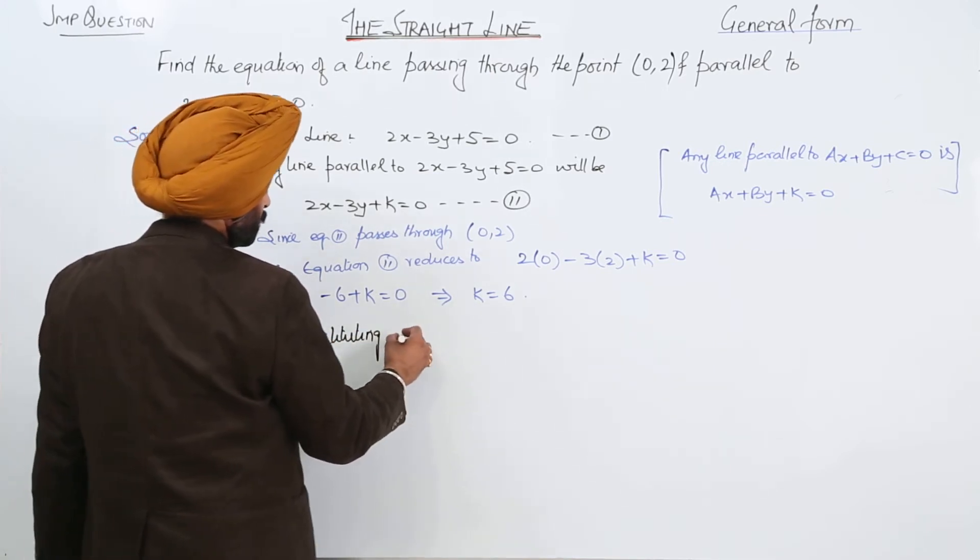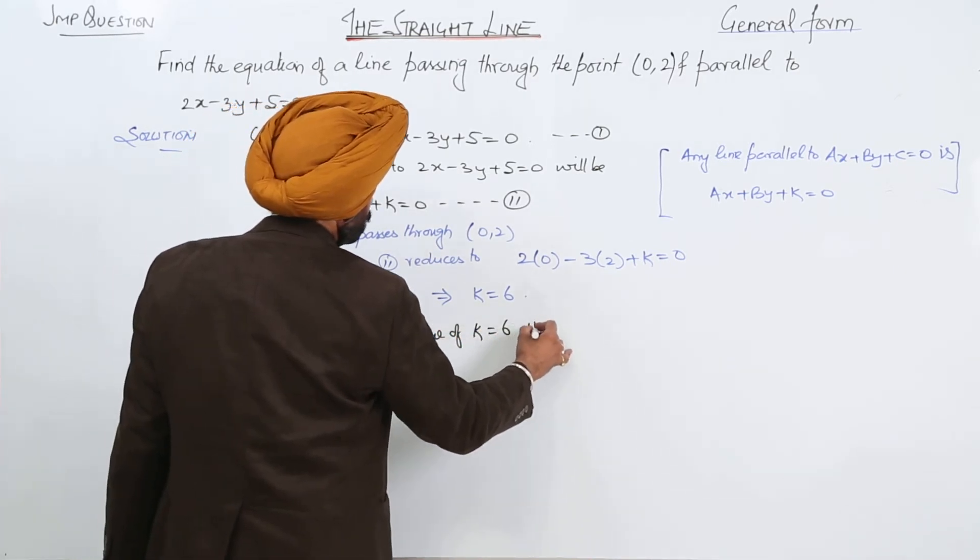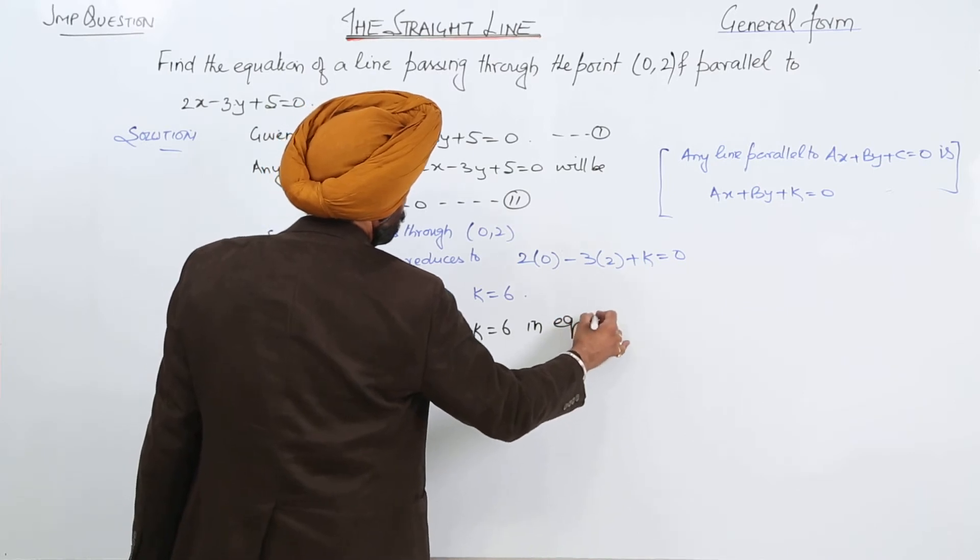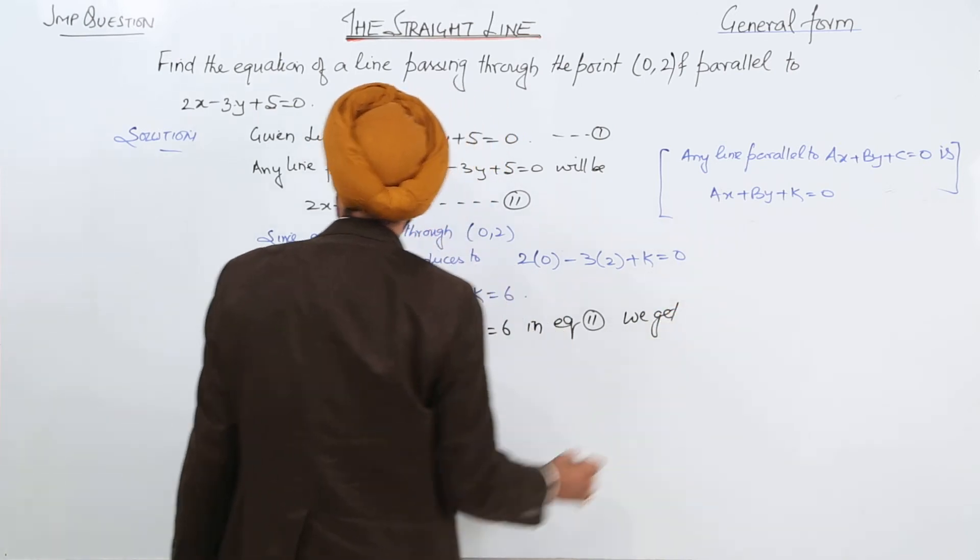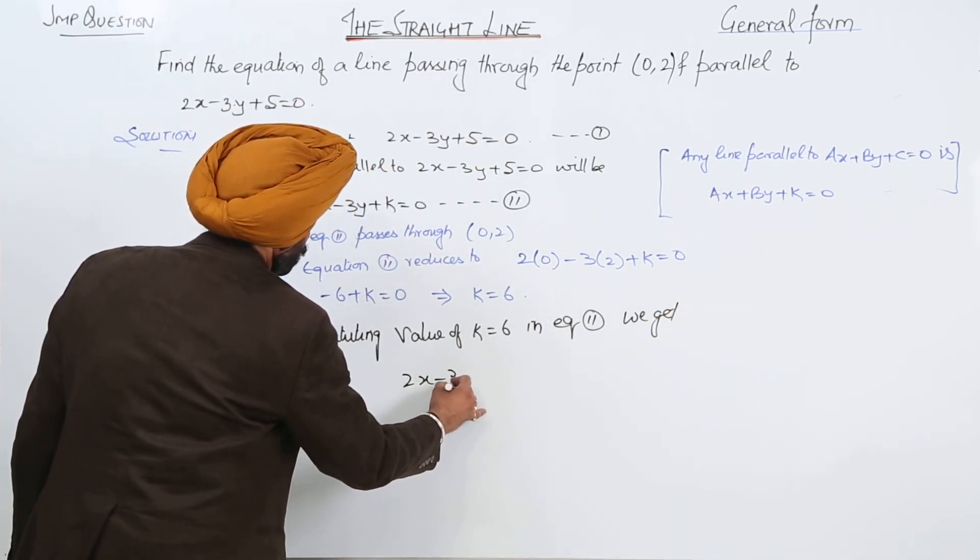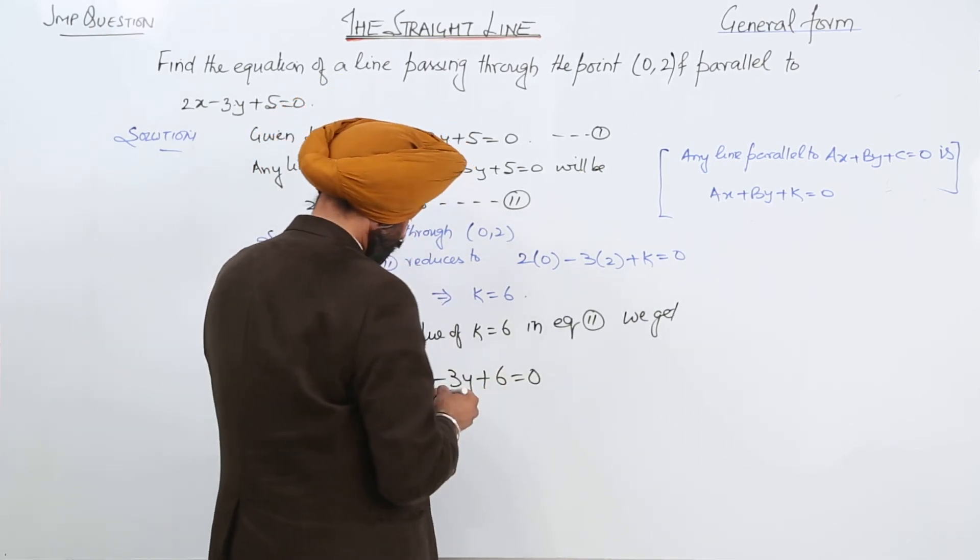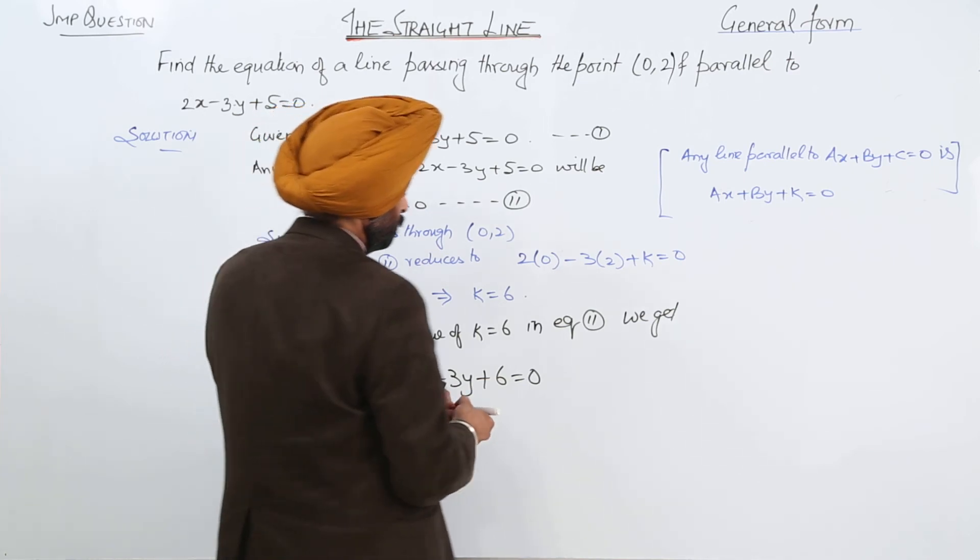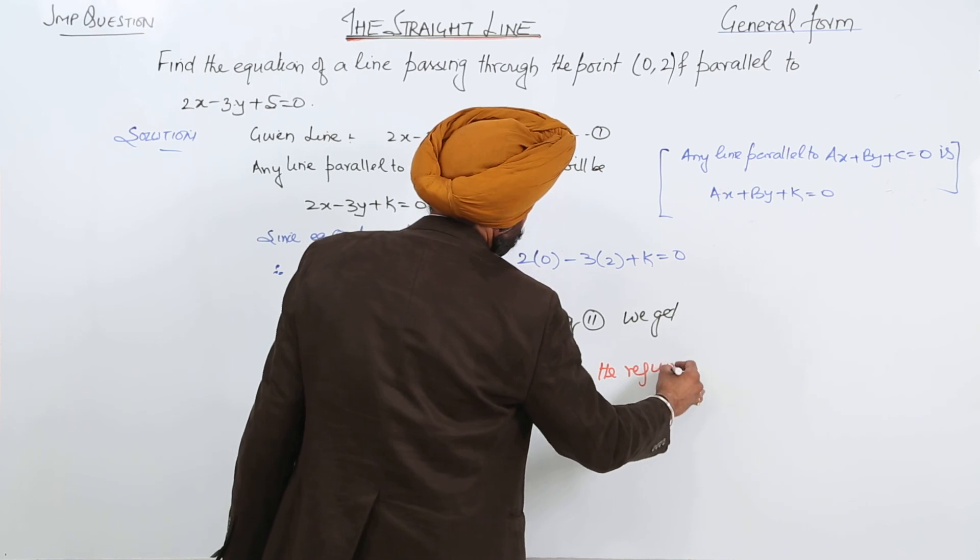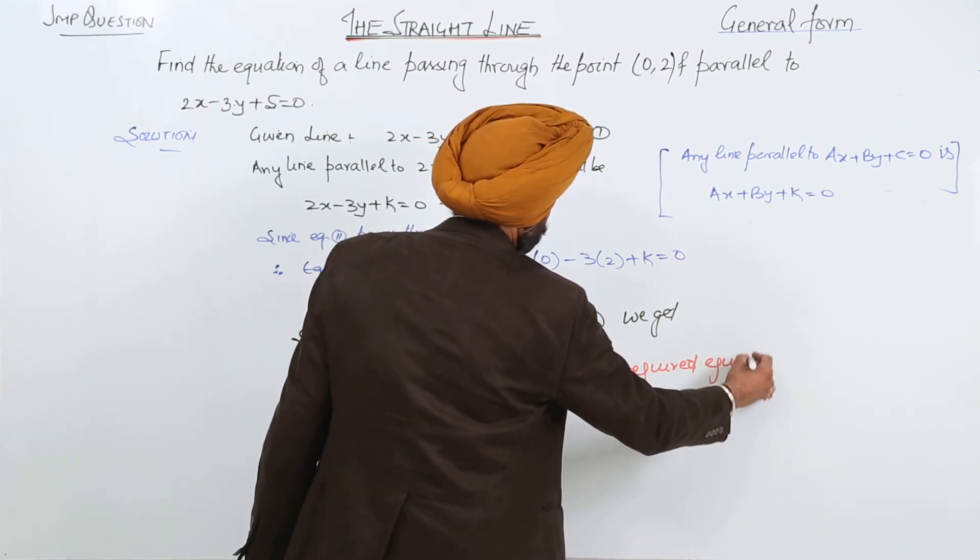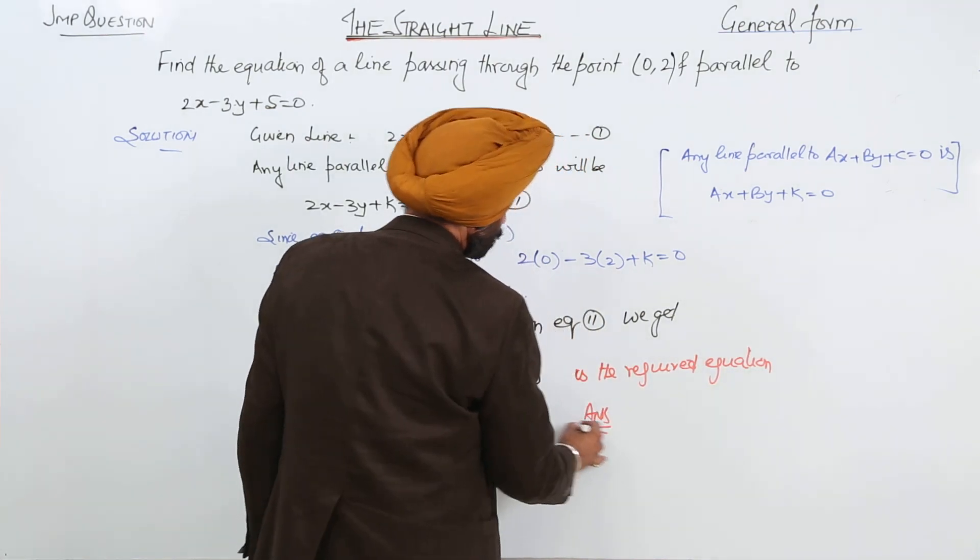Now, substituting value of k = 6 in equation 2, we get 2x - 3y + 6 = 0 is the required equation.